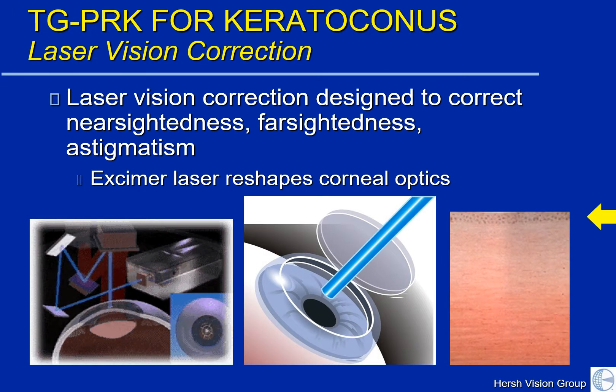You're probably all familiar with laser vision correction. These are the LASIK and PRK procedures, which are designed to correct nearsightedness, farsightedness, and astigmatism. These use an excimer laser to reshape the corneal optics. When thinking about LASIK or PRK, you can think of a contact lens, but rather than putting on a contact lens, the laser removes what you can think of as a tissue contact lens.